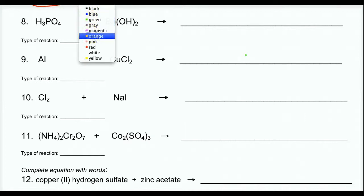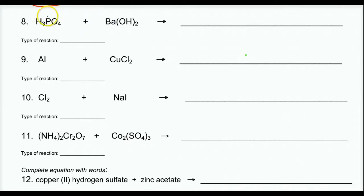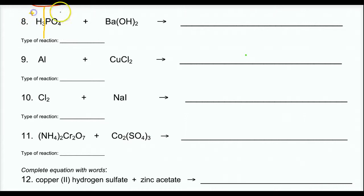I see that I have H3 and PO4, and I'm going to separate them right down the middle. I know this PO4 is a phosphate ion, and this H is a plus ion. I'm separating my positives from my negatives. Barium is an element that's positive, and my hydroxides are negative.